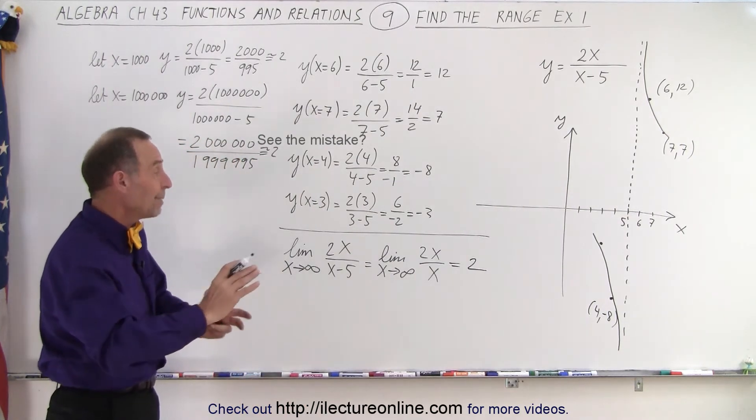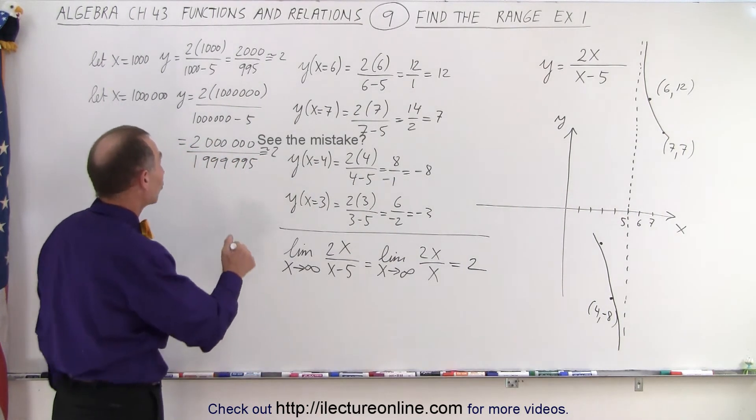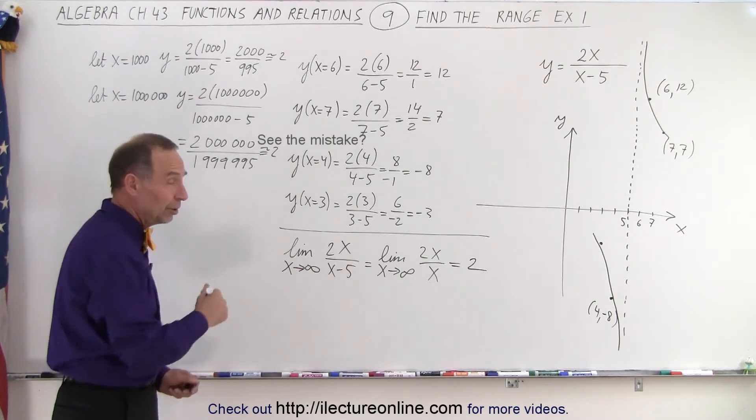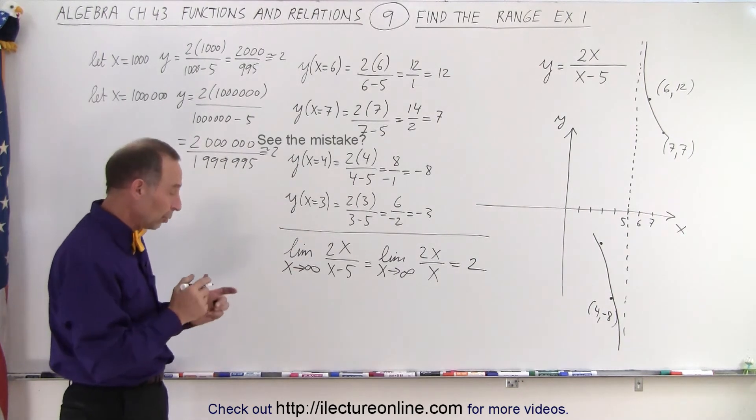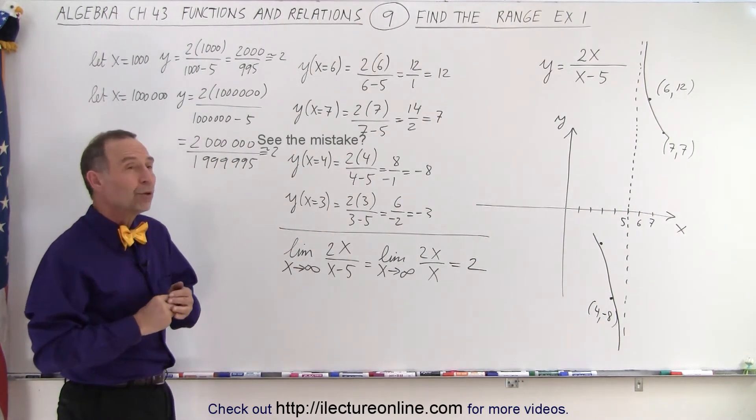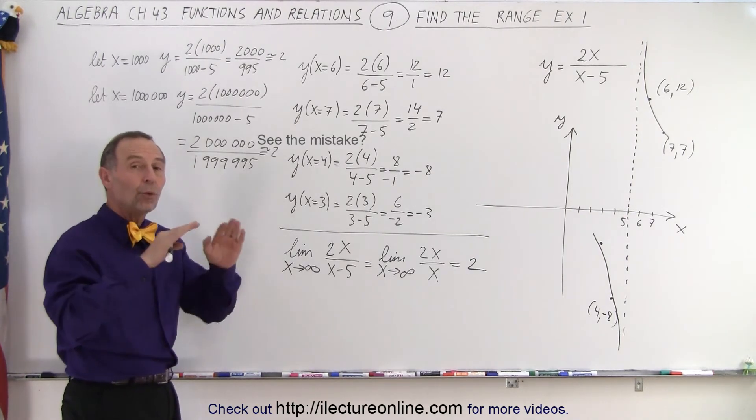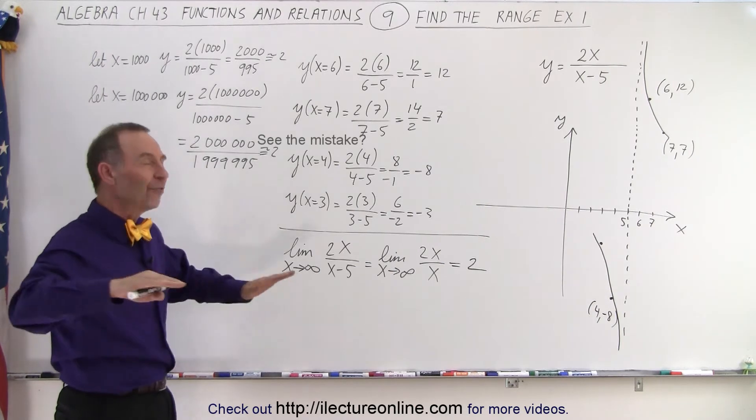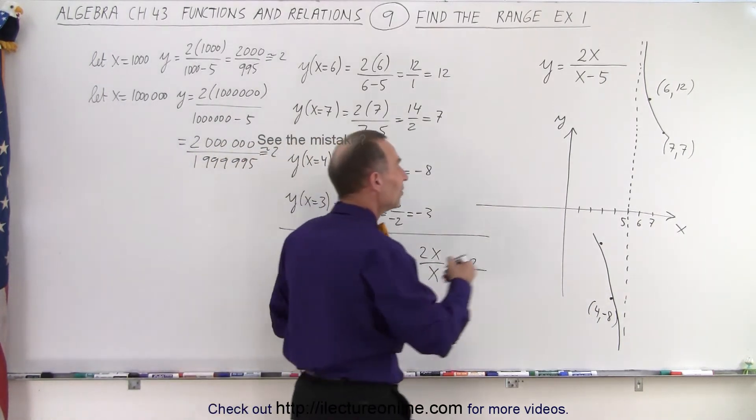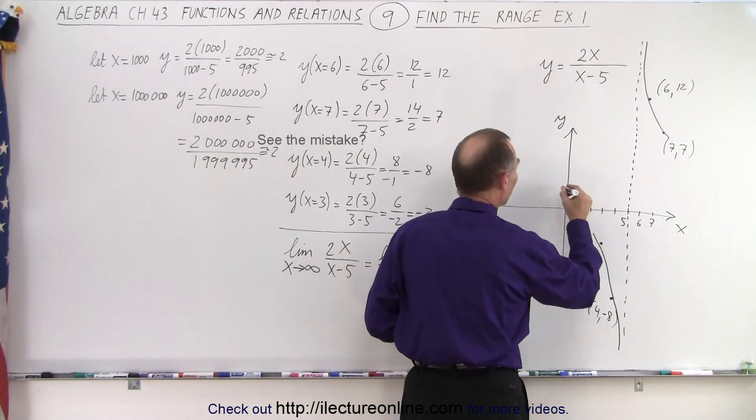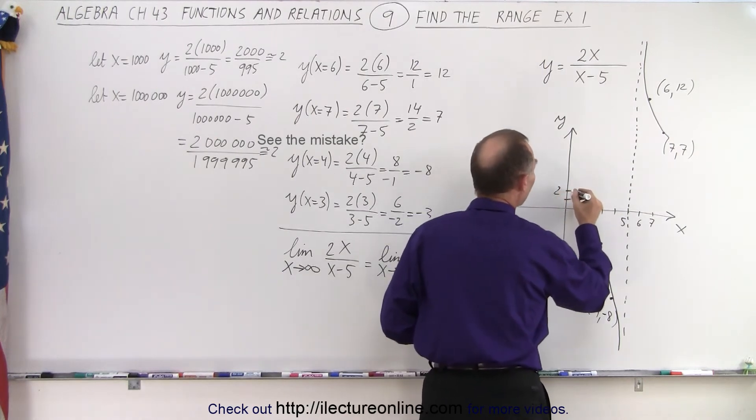As x becomes really big in one direction, we can also, of course, make x a negative big number, and we get the same result. In other words, no matter what we do, in the end, y will be equal to 2 only when x becomes infinitely large, which means that we have another asymptote, a horizontal asymptote, at y equals 2.